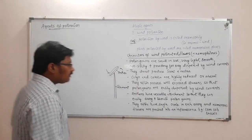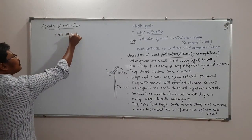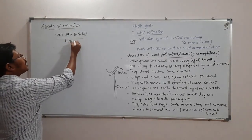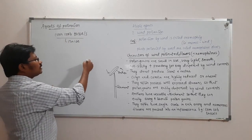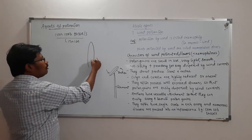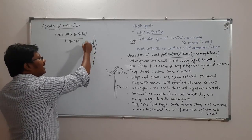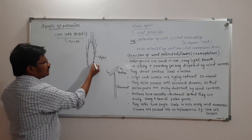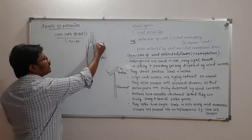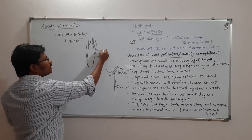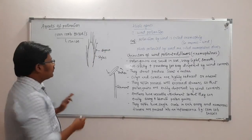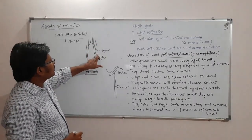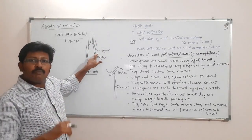Take the example of a corn cob and its tassel, as seen in maize. You will find many long, silky hair-like structures — these are actually the styles. At the base of each style there is an ovary, and at the tip is the stigma. These long styles are adapted to trap wind-borne pollen grains.